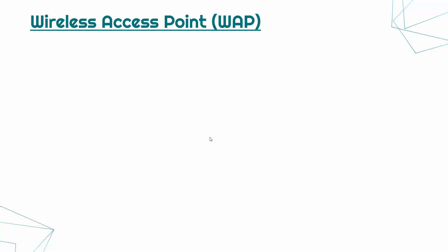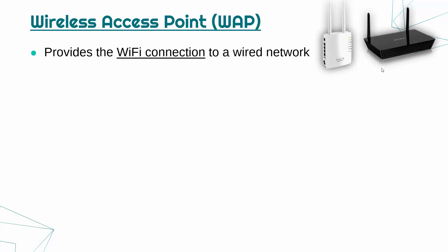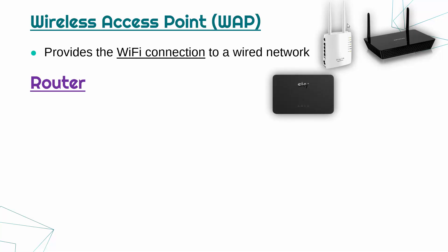A wireless access point, shortened to WAP, provides the wireless connection to a network. As the name suggests, it allows you to access the wireless network — in most cases Wi-Fi — and communicate with the rest of the standard wired network. Here is a small one you plug into a socket, and here is a bigger one. Both have antennas, though antennas can be internal. You can't have a wireless network without a wireless access point.